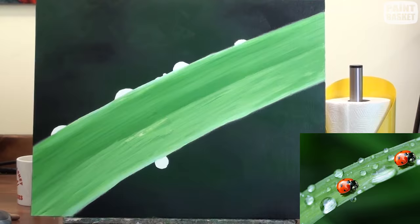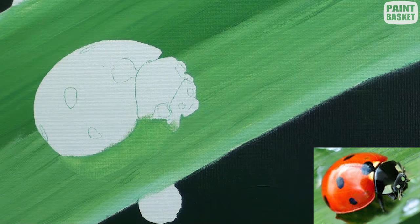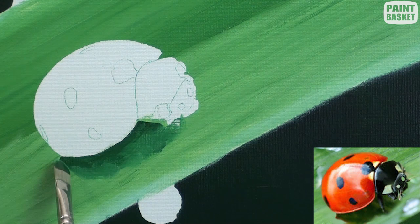While we've got green on the brush, use the dark green to paint the shadow cast by the ladybug. Don't forget to soften the edges of that shadow the further away you move from the ladybug to make it look natural.